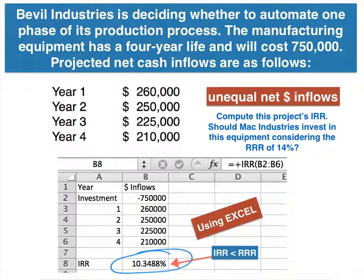Now you can see there are several different ways to find IRR. If you want a range and a quick sense of whether it's a good investment, use the annuity table method. If you want the exact IRR, use the trial and error method along with straight line interpolation, or simply use Excel.